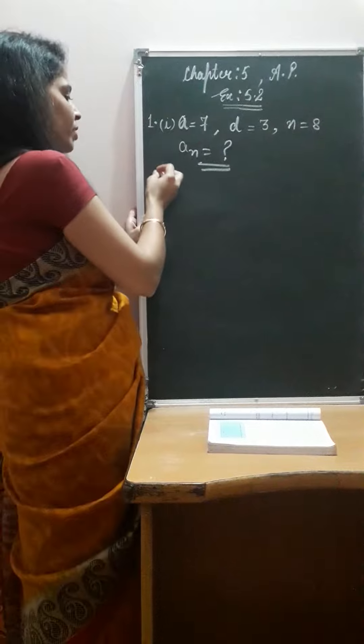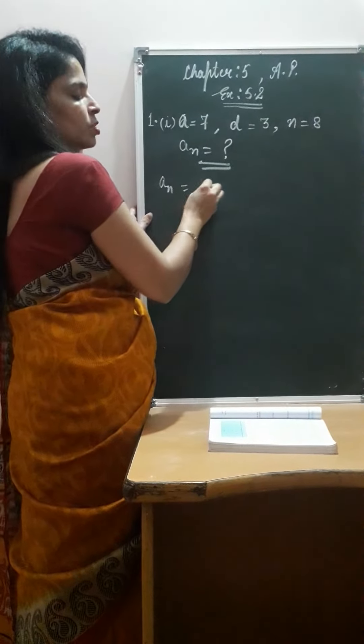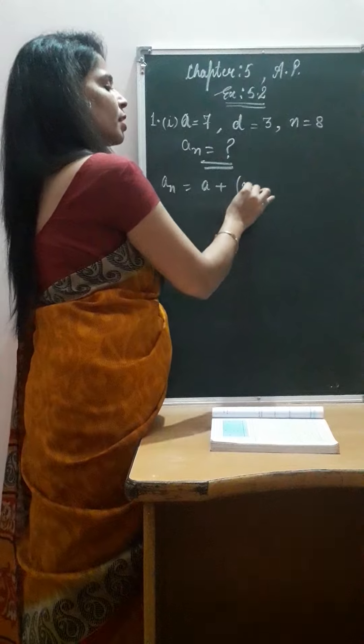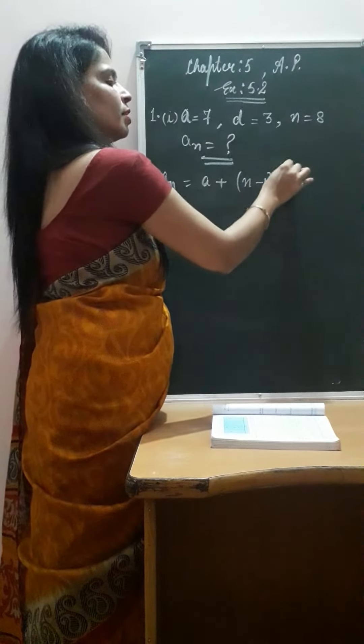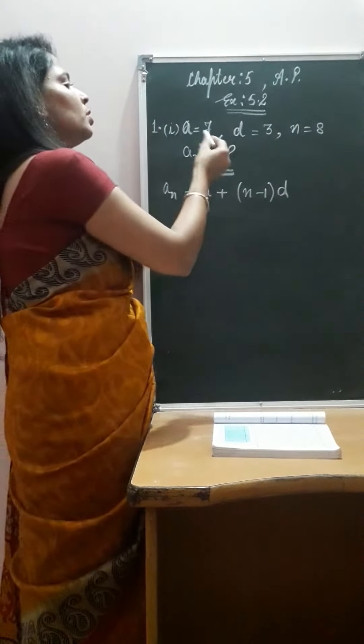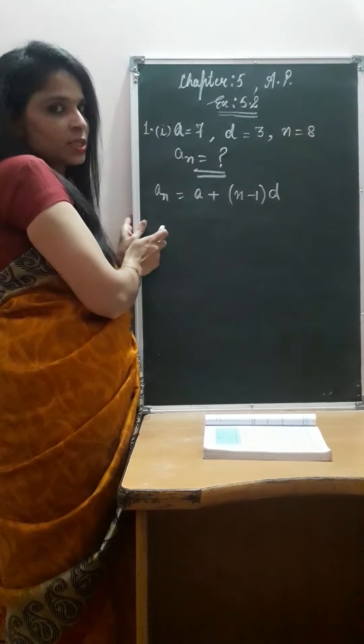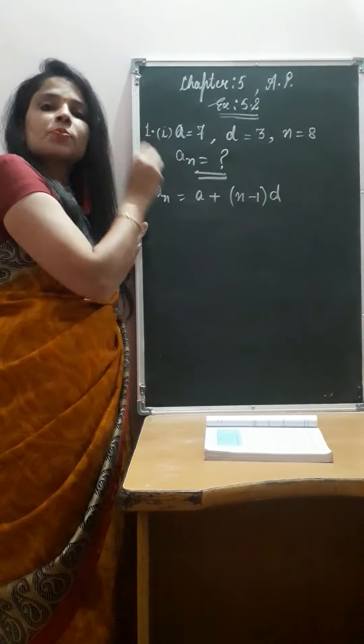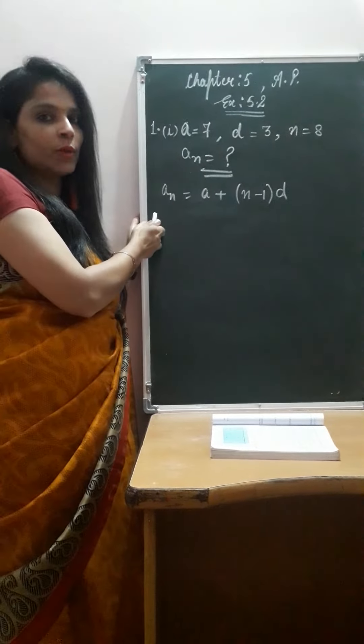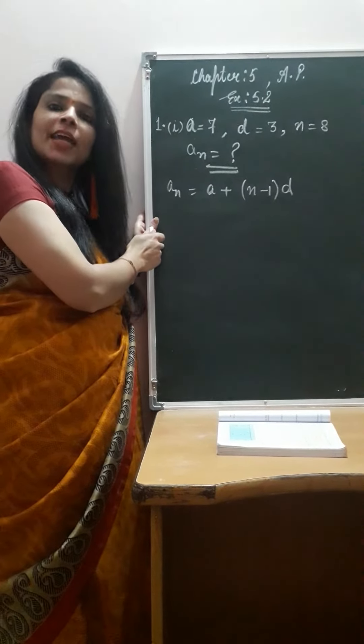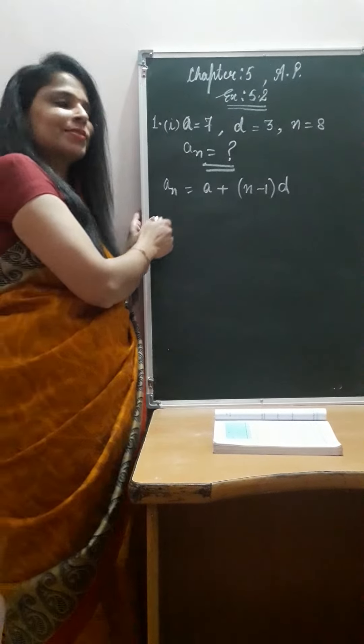The formula we have discussed is AN equals to A plus N minus 1 D. So three terms are given to us and the fourth term is missing. Just substitute the given terms in the formula and you can easily find out the unknown term.